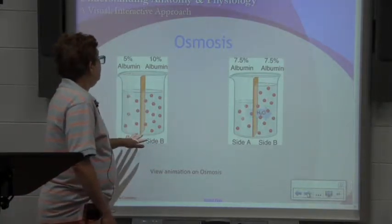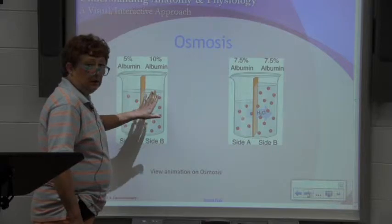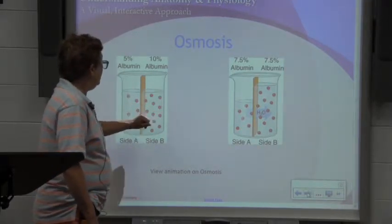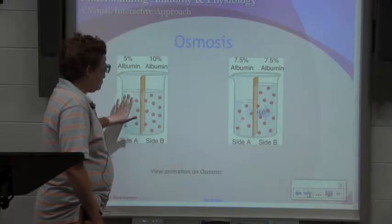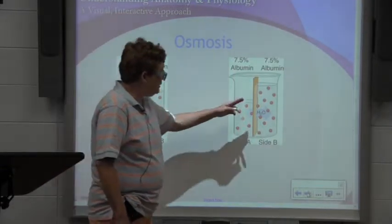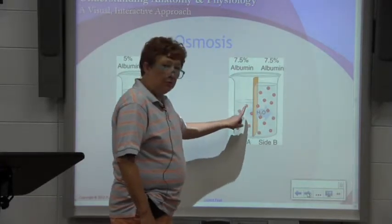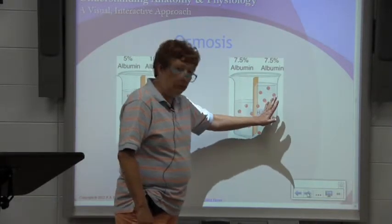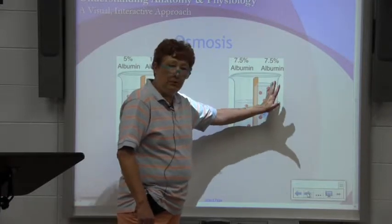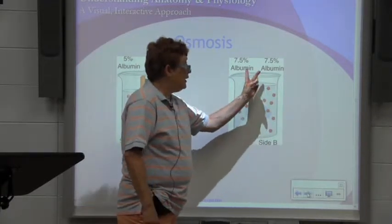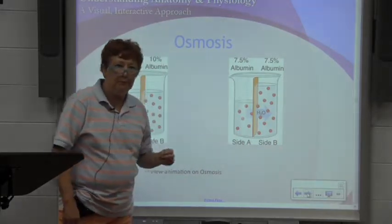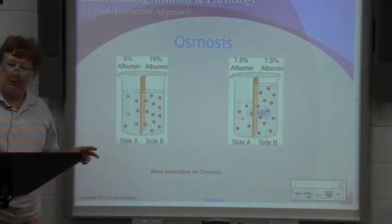There's more albumin on one side than the other, which means there are more free water molecules on the side with less albumin. So the water, where there's more of it, passes through the semi-permeable membrane to diffuse the albumin concentration, resulting in an equal concentration of 7.5% albumin on both sides. That's osmosis.